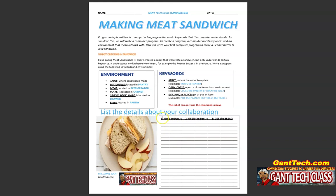Here are my examples. First step: move to pantry. I'm using the keyword 'move' and the environment 'pantry,' which my robot understands. Second step: open the pantry. He understands the keyword 'open' and 'pantry' as the location. Third step: get the bread. He understands the keyword 'get' and understands that the bread is inside the pantry.